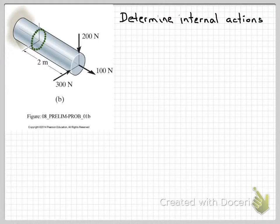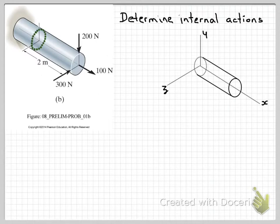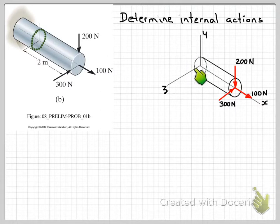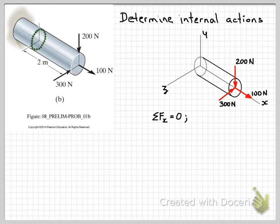The first step in determining the internal actions is to take an imaginary cut through the section where we want to know those internal actions. So over here I've now drawn the structural member, but only from this point forward — where we want to know the internal actions from that section forward. From there we start to look at equilibrium, putting on our applied loads at the end, and then at our internal section we must have internal actions that keep these external loads in equilibrium. So we look at each of the equilibrium equations in turn.